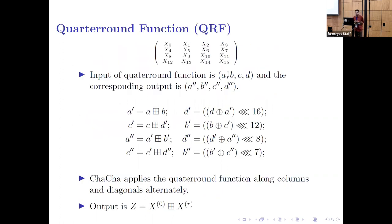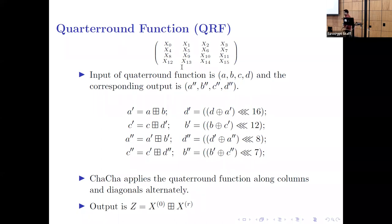So that's the ChaCha matrix. We have to apply the quarter round function on the ChaCha columns — first column, second column, third column, and fourth column — and after that we apply it on the diagonals, like X0, X5, X10, X15 and X1, X6, X11, X12, and so on. So alternatively, we apply column rounds and diagonal rounds.